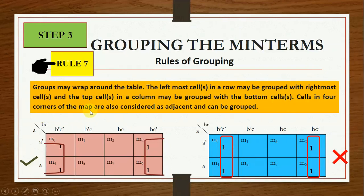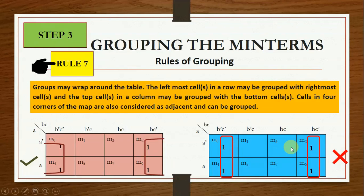Cells in the four corners of the map are also considered adjacent and can be grouped. For example, if there are ones on the left side and right side of a row, instead of making two pairs we can make a quad by wrapping — if you roll the paper, they come adjacent to each other, giving a more minimized expression.